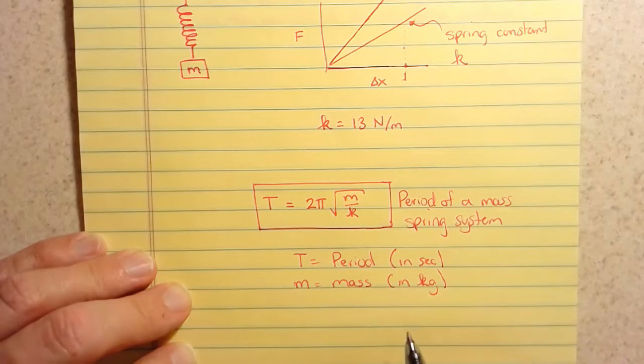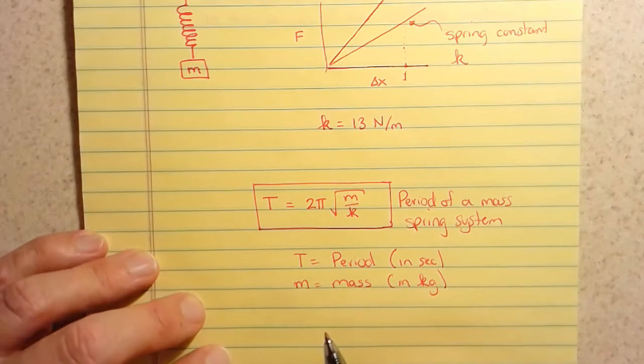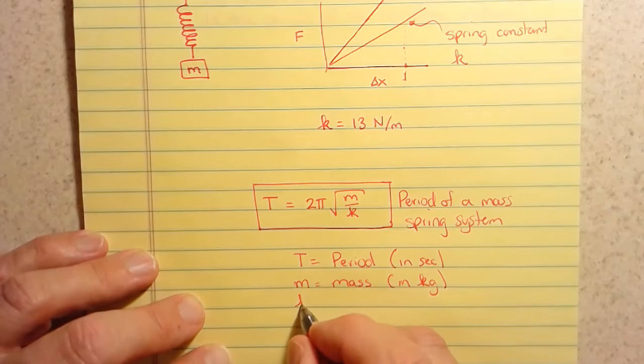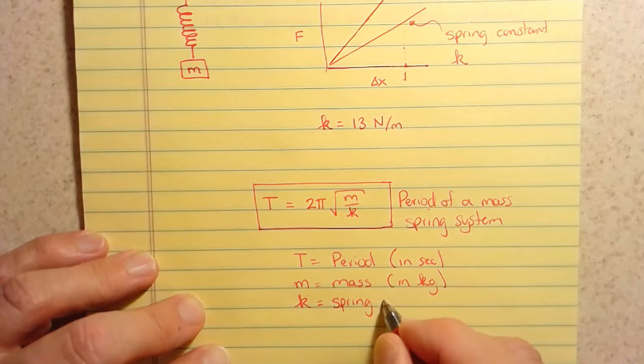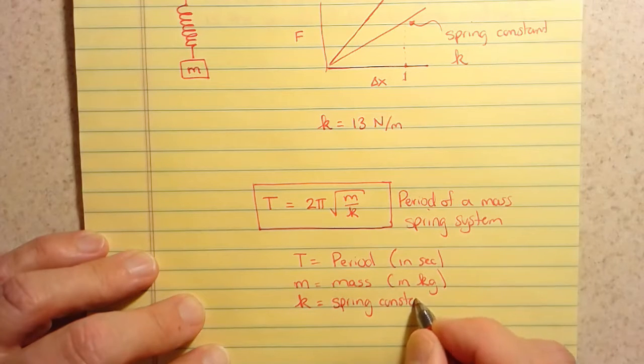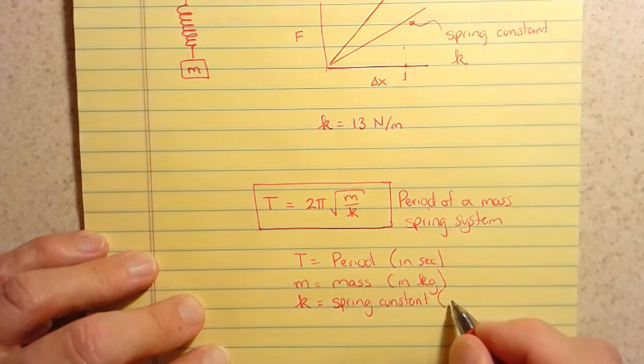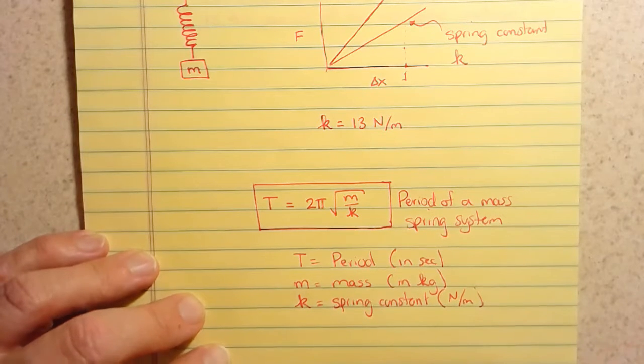So if you get a problem in grams, which you will in homework, you'll have to convert that to kilograms. And then K is the spring constant, the strength of the spring. And that is going to be in newtons per meter.